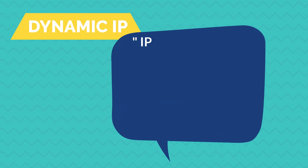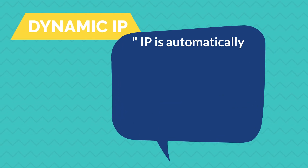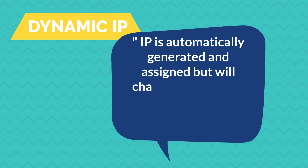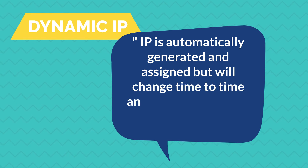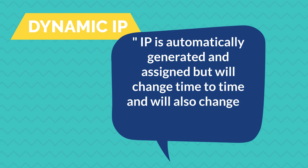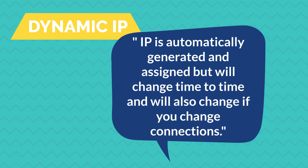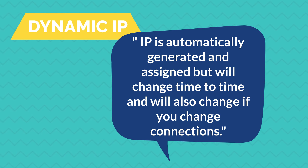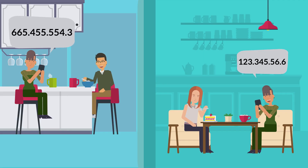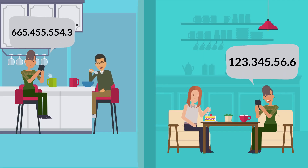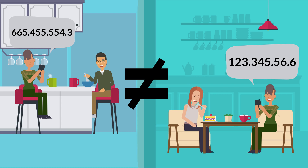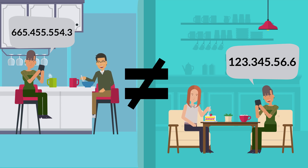With a dynamic IP, the IP is automatically generated and assigned, but will change from time to time and will also change if you change locations. An IP assigned from your home Internet will not be the same IP assigned from a local coffee shop or a friend's Wi-Fi.